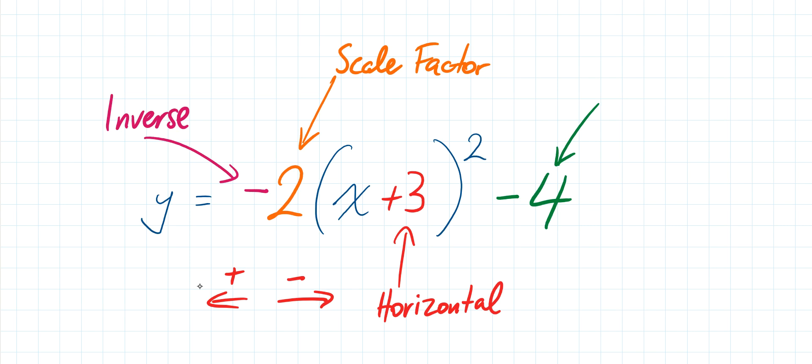Last but not least, in the green here we have our vertical transformation. This is the part of the vertex formula that shifts the parabola up or down. Because we've got a minus 4 here, it's going to shift the vertex down. If we had a positive 4 it would shift it up. So this is the part of the formula that moves the parabola up or down vertically.